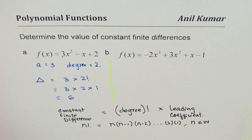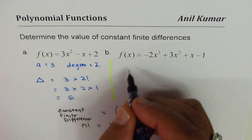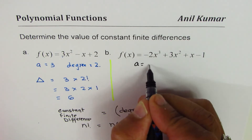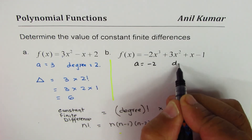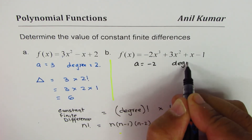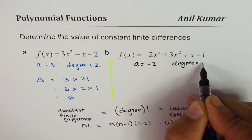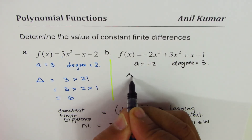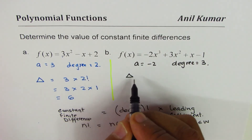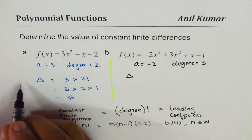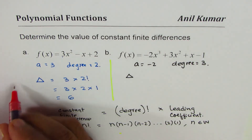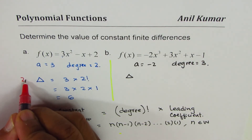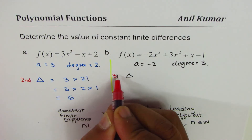For the second one, Part B, the leading coefficient a is −2 and the degree is 3. Therefore the constant difference — which is the third constant difference — needs to be calculated using the formula.